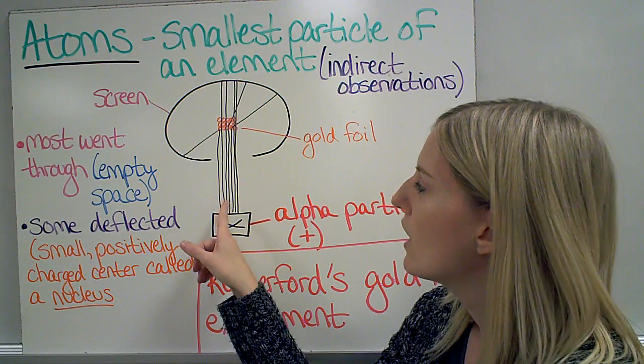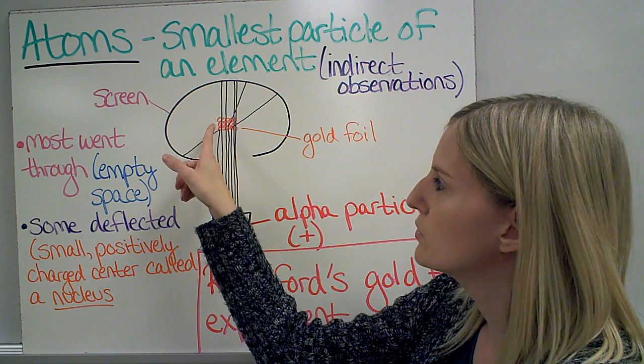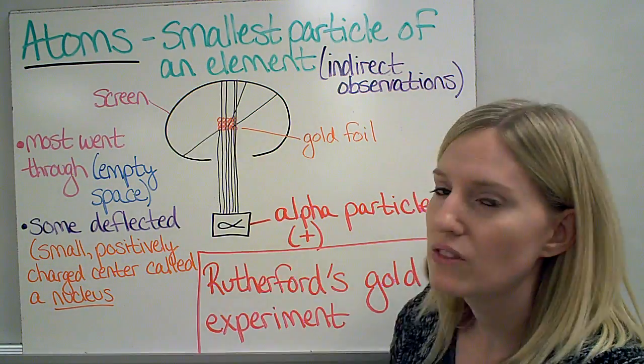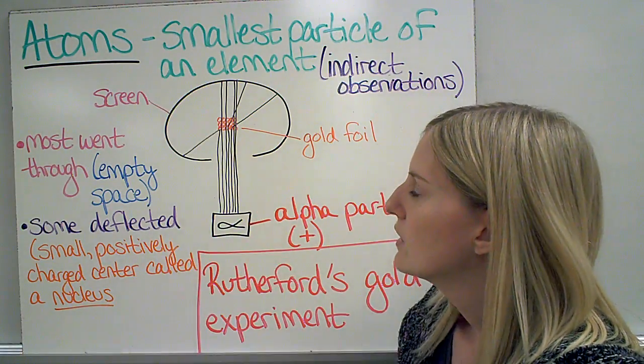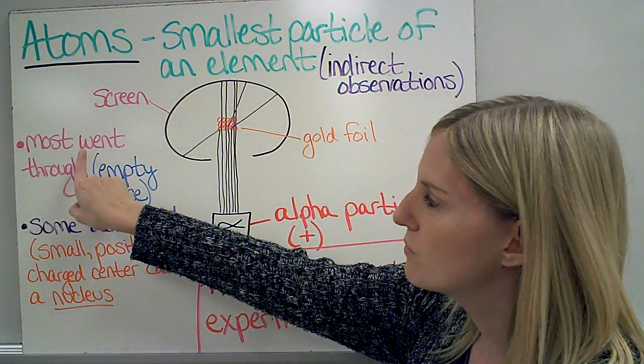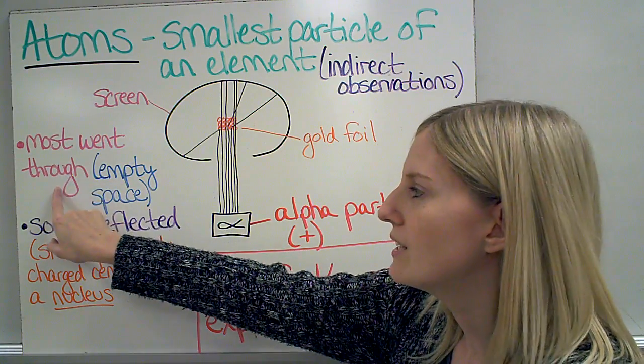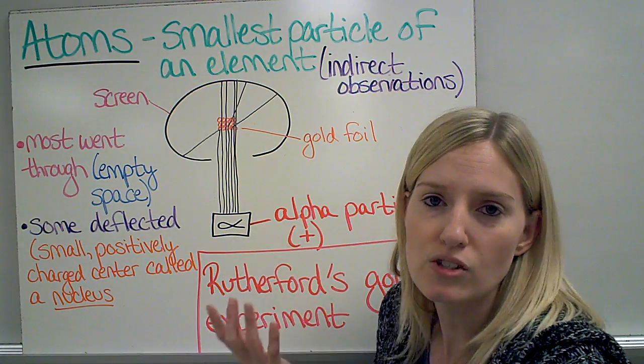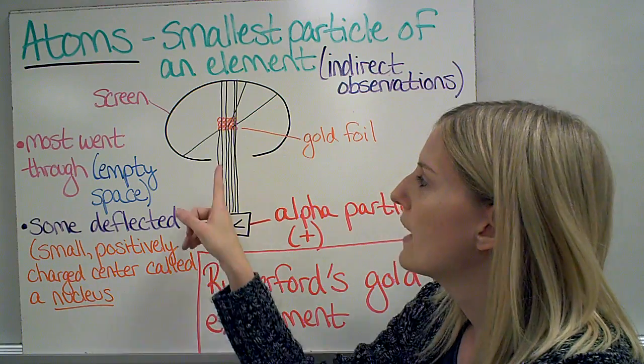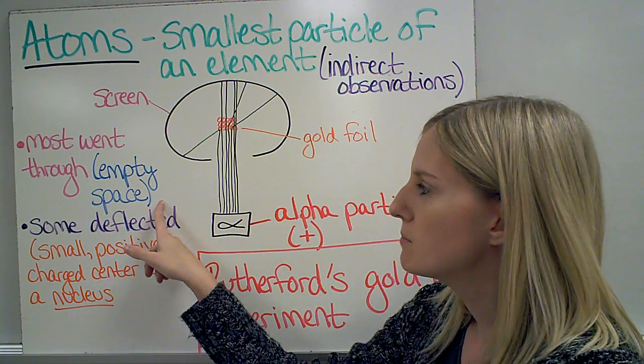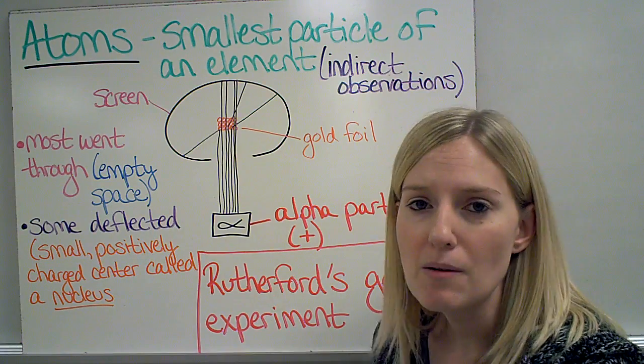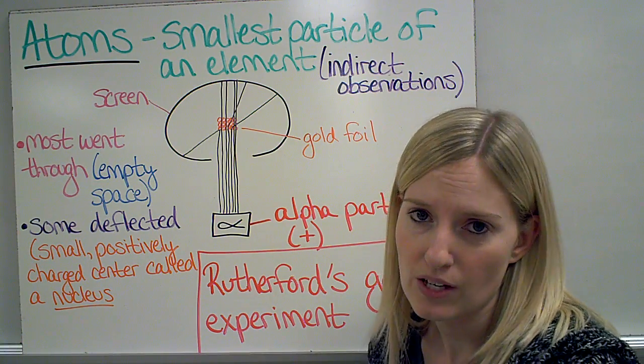First of all, most of the particles that were shot through the gold foil went straight through to the other side on this side of the screen. Because most of them went through, we can assume or infer that most of those gold atoms are made of empty space, but some of them did not go straight through.